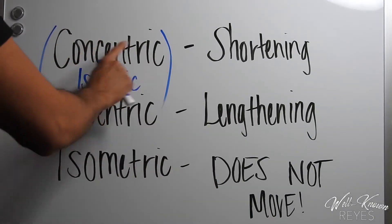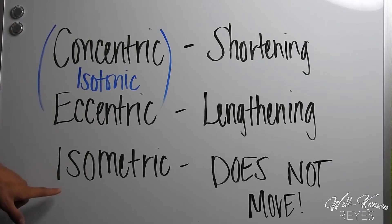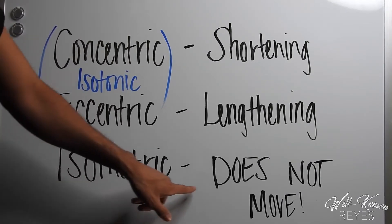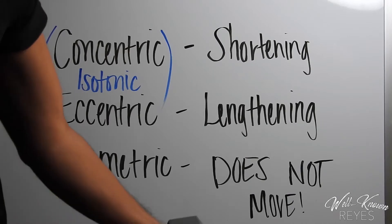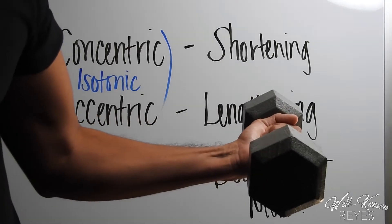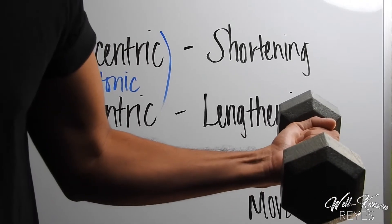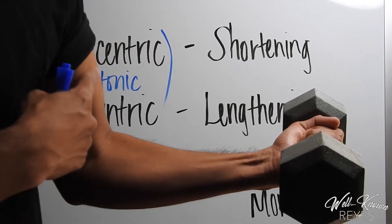Now let's talk about an isometric contraction. This is when the muscle fibers do not move. Here's an example. Here I have my dumbbell. If I just hold it like this, my muscle fibers are not moving. They're activated but they are not moving. So this is considered an isometric contraction.